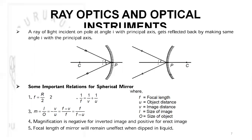For spherical mirrors, f equals R by 2. The mirror formula is 1/f = 1/v + 1/u. Magnification m equals size of image divided by size of object, which is equal to minus v/u. If u or v is not given, the alternate formula is (f minus v)/f or f/(f minus u). Magnification is negative for an inverted image and positive for an erect image. The focal length of a mirror remains unaffected when dipped in liquid.